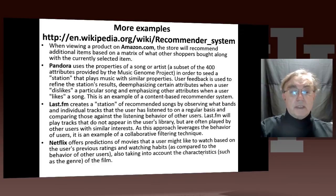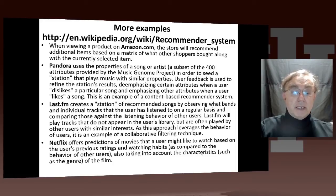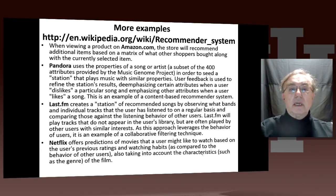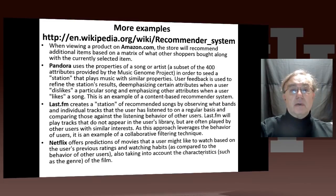Netflix is similar, except it operates on a larger scale than probably Last.fm and Pandora. It does so in a far more sophisticated fashion, which takes into account both properties — because it wants to give so-called diversity, offering you many different types of movies — as well as the recommender system idea.